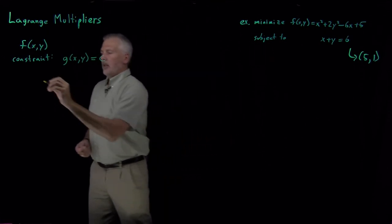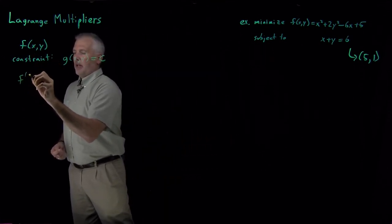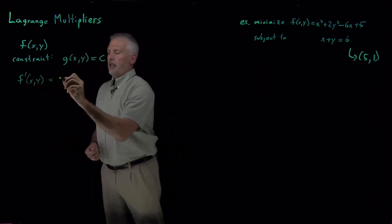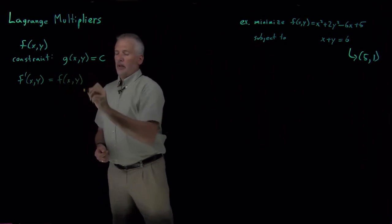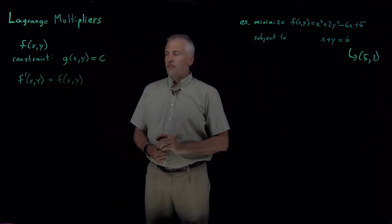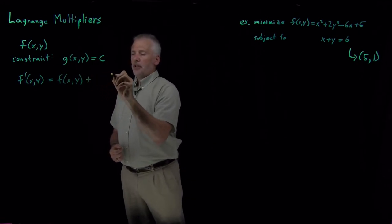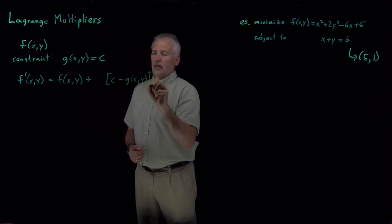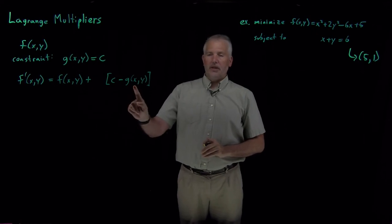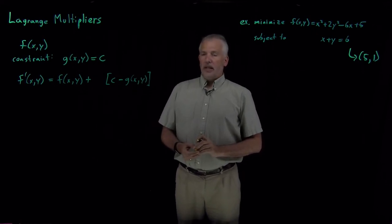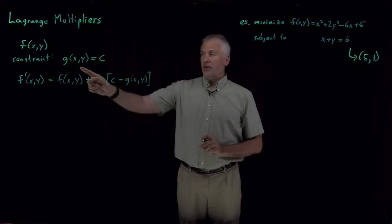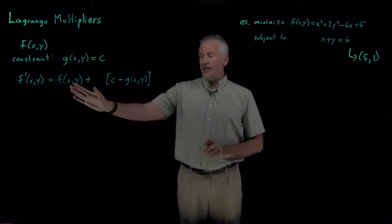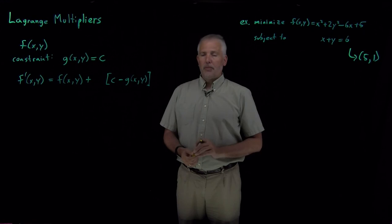The trick is, instead of thinking about the original function, we make up a new function f'. That's going to be the original function f(x, y) plus the quantity c minus the constraint equation — that is, c minus g(x, y). If the constraint is obeyed, whenever x and y satisfy the constraint, g(x,y) equals c and this difference is zero. So all we've done is add zero to the function — we haven't changed it at all.